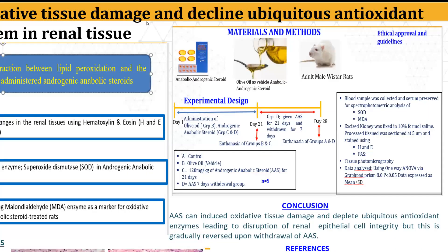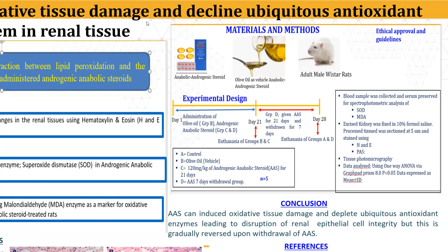In this study, we used 20 adult male Wistar rats with an average weight of 150 grams. Ethical approval was granted by the Department of Anatomy, Bingham University, and the animals were housed in the animal house in the department. Care was given according to guidelines for the care and use of animals in research. Anabolic androgenic steroids were procured from a pharmaceutical company in Abuja and administered orally using olive oil as vehicle at 120 milligrams per kilogram for 21 days.